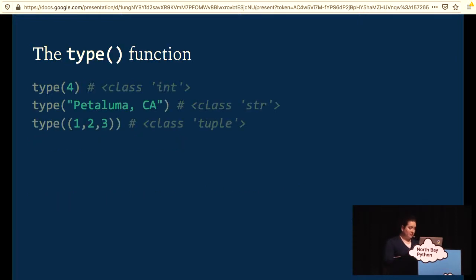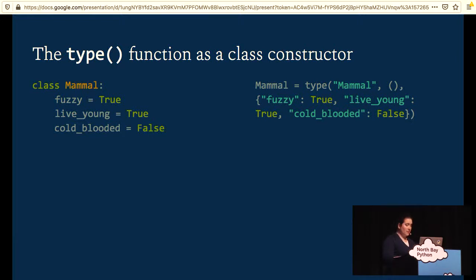So Python has a type function. And when given a single parameter, type can tell us what the type of a variable is. However, it has a second role and it is also the class constructor. So passing it three parameters turns it into the class constructor. And in this case, both of these mammal classes are equivalent. In the type constructor, we have the name passed as a string, an empty tuple which says that the class doesn't inherit from anything, and a dictionary of any constants applied to the class. And when people joke that Python is dictionaries all the way down, this is part of what they're referring to.